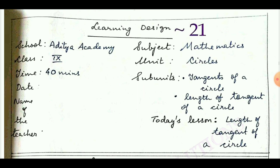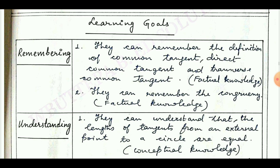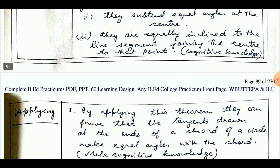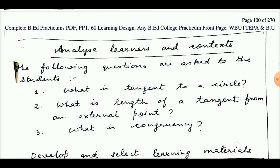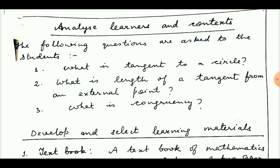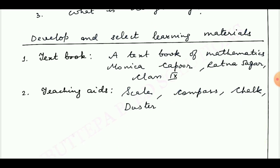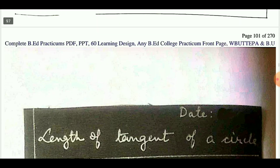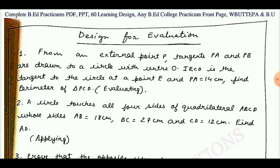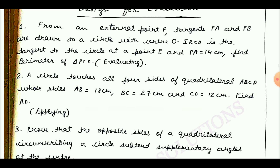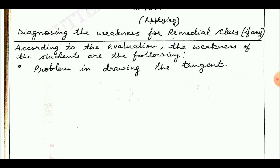Learning design number 21 is taken from Class 9. Today's lesson is: Length of Tangent of a Circle. The learning goals are remembering, understanding, applying, analyzing, evaluating, and creating. Next: analyze learner and context, develop and select learning materials, design for evaluation, and diagnosing the weakness.